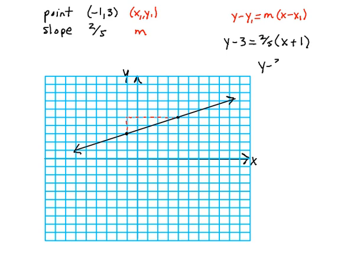And then simplifying that, I'll have 2 fifths X plus 2 fifths. Distributing that in, and then Y is equal to 2 fifths X plus 2 fifths. I'm going to add 3 to both sides, so I'm adding 15 fifths to the right side. And then finally, I have Y is equal to 2 fifths X plus 17 fifths.